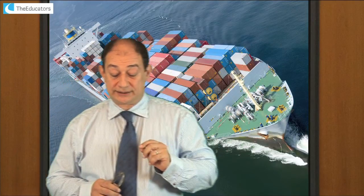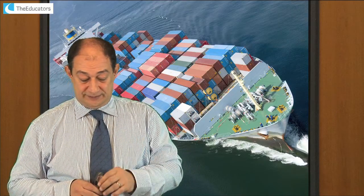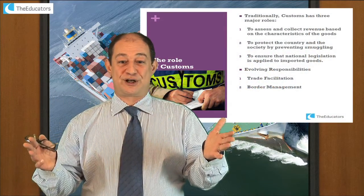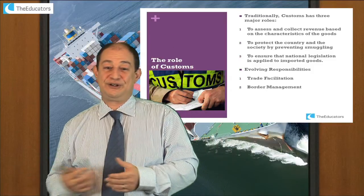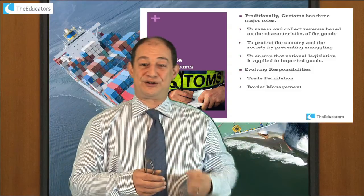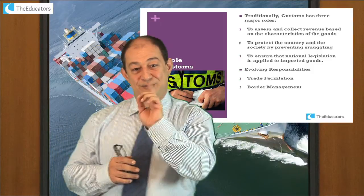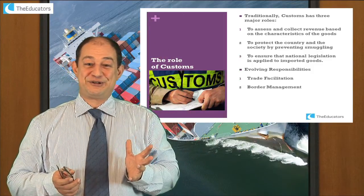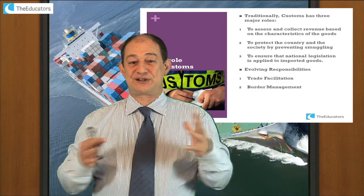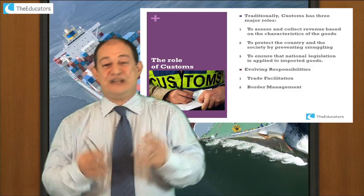Today we're going to be talking about the role of customs in international trade. Anybody who has done any business crossing a border knows there are two borders to cross — one exiting from your country where you are manufacturing or producing your goods, and then entering another country, so there is another custom or border to cross. There are two customs involved, not one, and they all have their own regulations. It's actually impossible to talk about custom tariffs and regulations in a global way because each one is different.